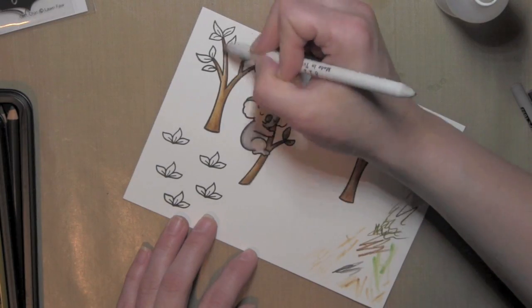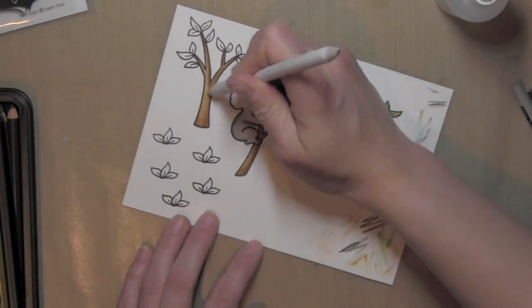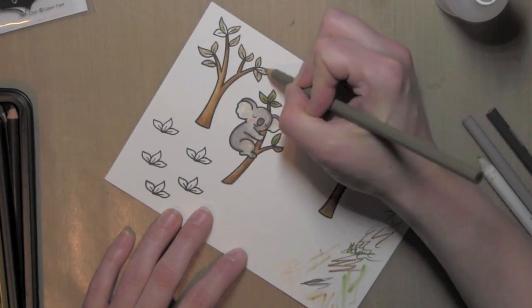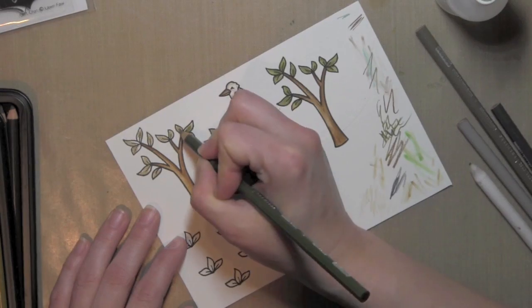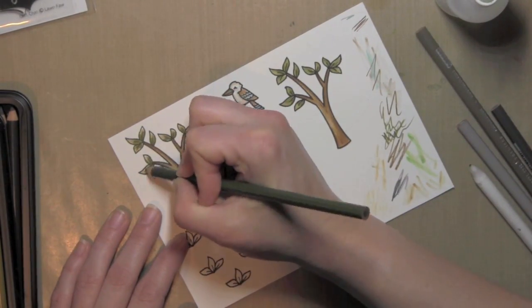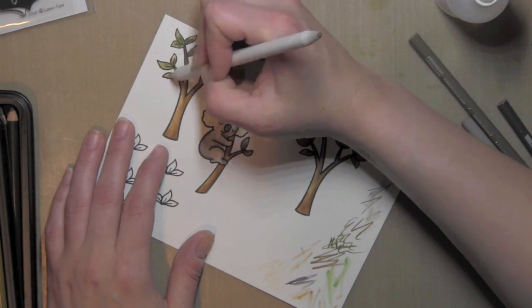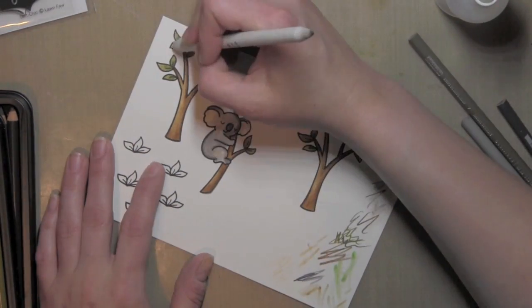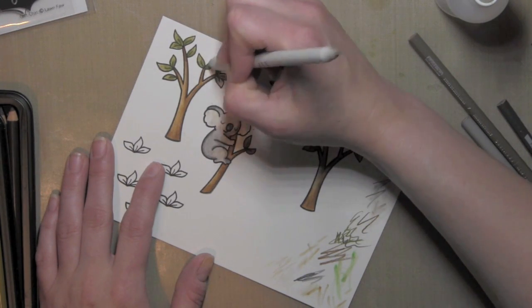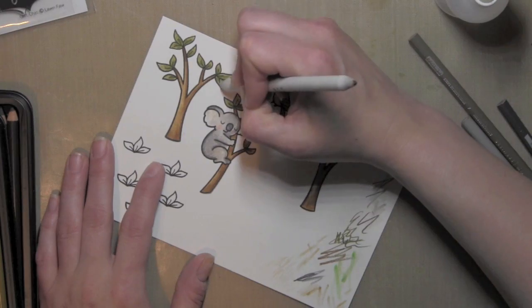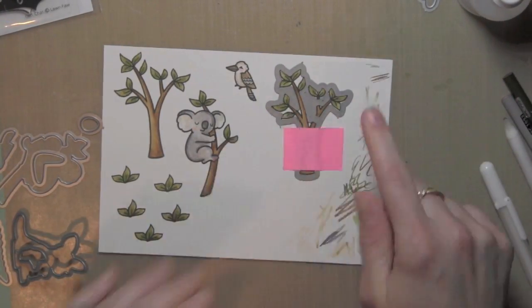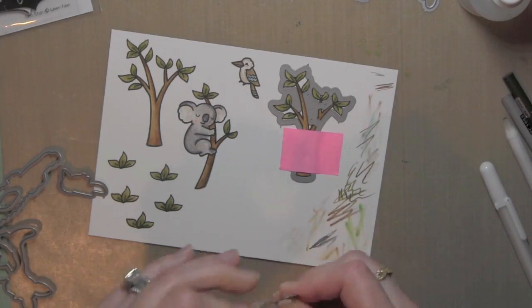I'll go ahead and finish coloring the rest of these trees and the greenery and things before I die cut my pieces. I think when creating a scene like this it's important to have not to crowd your card or put too many pieces in, but you definitely want it to be complete. And I love all of the little elements Lawn Fawn puts into their stamp sets like these little trio of leaves and things and the little bird. It really helps complete the whole image and the scene.